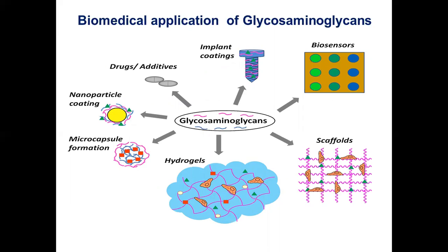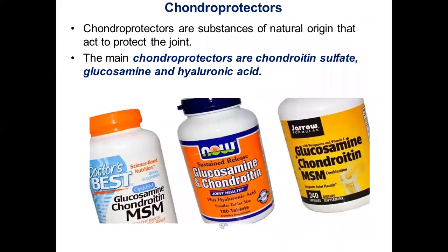Glycosaminoglycans are used in different medical applications because of their multi-regulatory functions, for example anticoagulation of blood, inhibition of tumor growth and metastases, and control of inflammation. The main chondroprotectors are chondroitin sulfate, glucosamine, and hyaluronic acid.